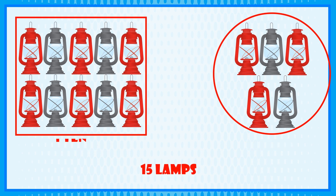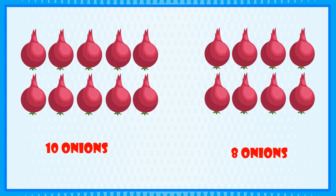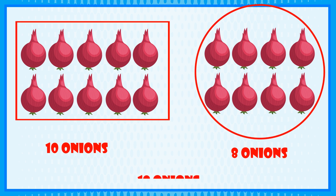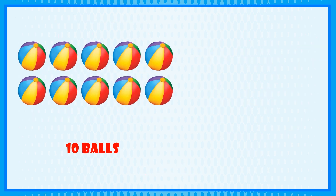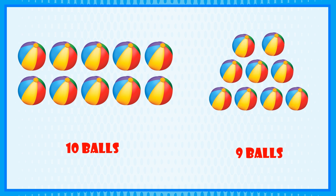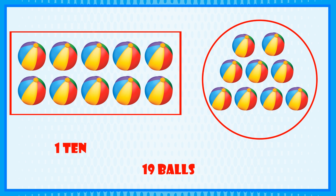So we have 1 ten and 5 ones. 10 onions plus 8 onions is equal to 18 onions. So we have 1 ten and 8 ones. 10 volts plus 9 volts is equal to 19 volts. So we have 1 ten and 9 ones.